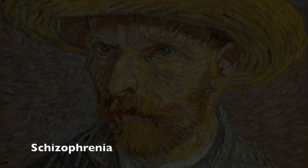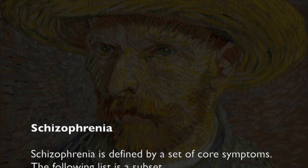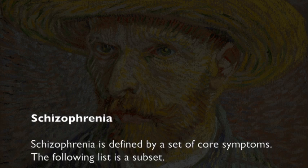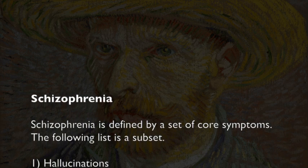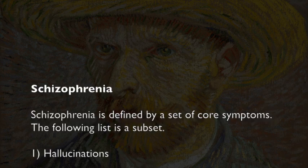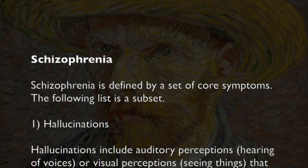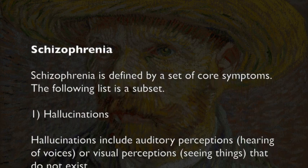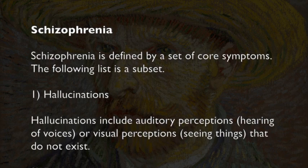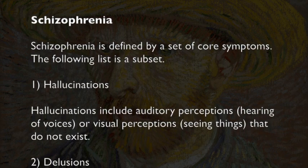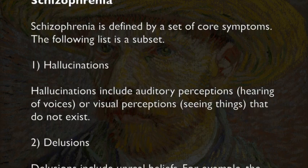Schizophrenia is defined by a set of core symptoms. The following list is a subset. First: Hallucinations. Hallucinations include auditory perceptions — hearing of voices — or visual perceptions — seeing things — that do not exist.